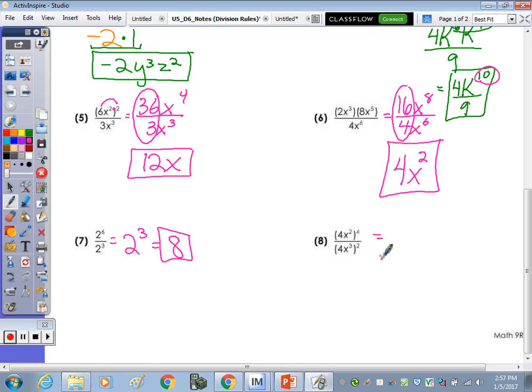Last one on the front. So we need to do 4x squared to the 4th, so 4 to the 4th power. We've got 4 times 4 is 16, times the third 4 is 64, and then 64 times the 4 is 256. x to the 2 times 4 is 8. And then 4x cubed squared, 4 squared is 16, x cubed squared is x to the 6th. 256 over 16 is 16, and then x to the 2nd.